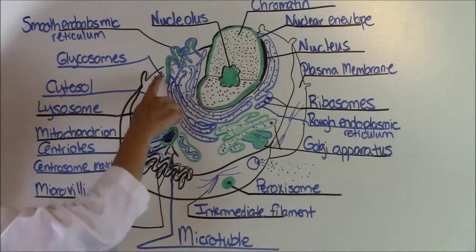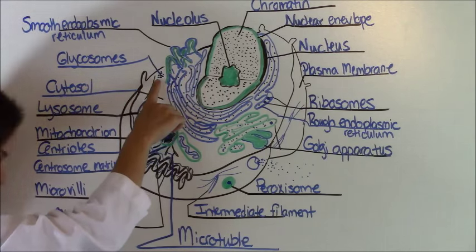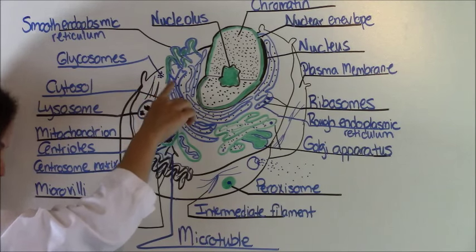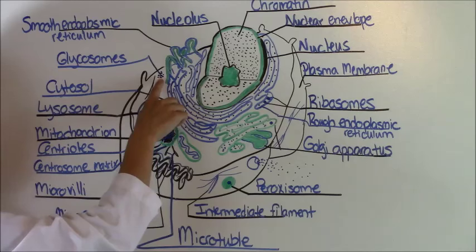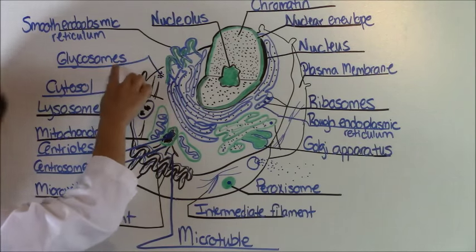Your glycosomes, this right here, these are what are called sugar containing bodies. They store sugar in the form of glycogen for the cell's main energy source. So this is how the cell gets its energy. And it's another word for glycogen, so it's your glycosomes.